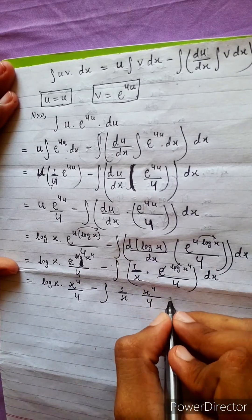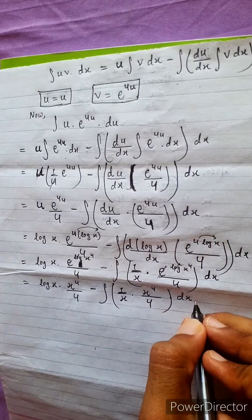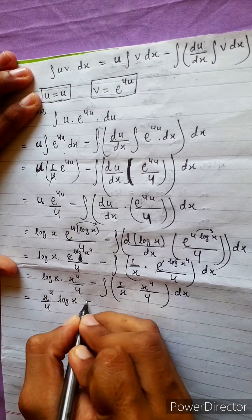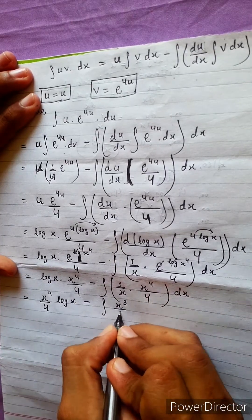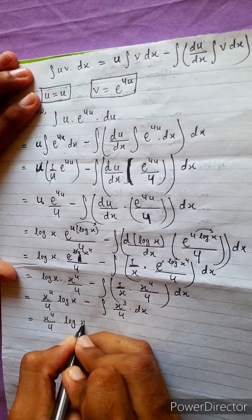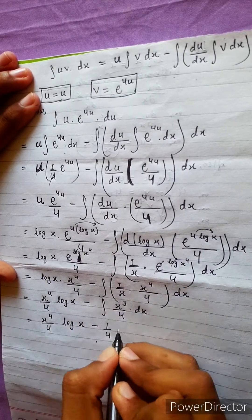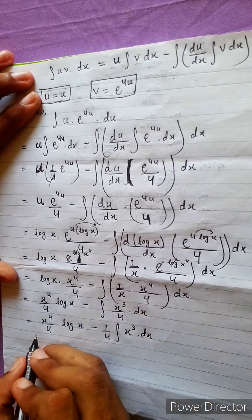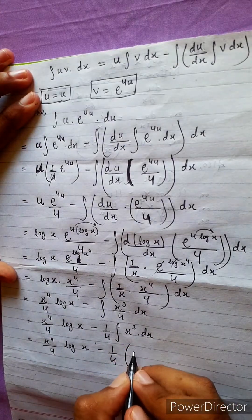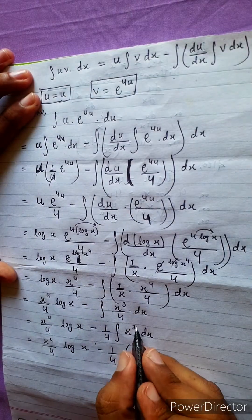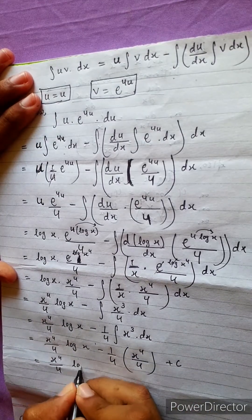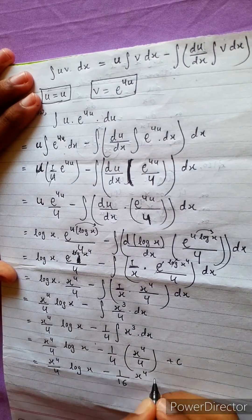After back-substituting u = log x: x²y = x⁴/4 · log x − (1/4) · ∫x³ dx = x⁴/4 · log x − (1/4) · (x⁴/4) + c = x⁴/4 · log x − x⁴/16 + c.